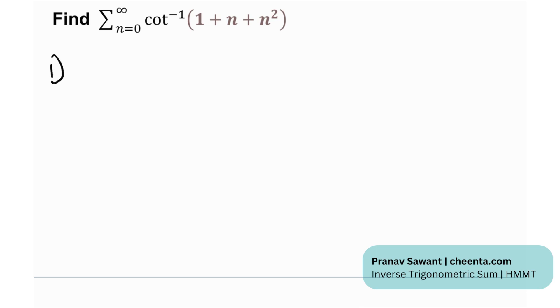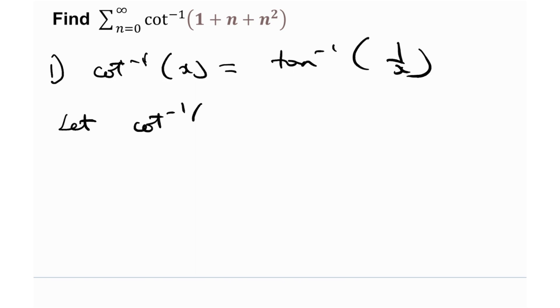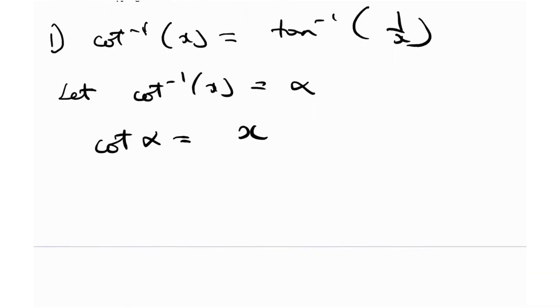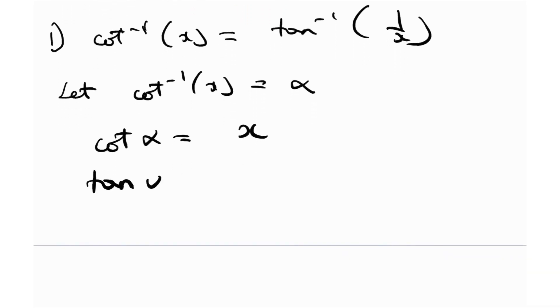The first one is that cotangent inverse of x is nothing but tangent inverse of 1 by x. And there exists a really cool proof for this. So let cotangent inverse x be equal to alpha. That means that cotangent alpha is equal to x. But then what is tangent of alpha? Well, it would simply be 1 by x because cotangent, tangent, the product is 1. So if cotangent alpha is x, tangent alpha will be 1 by x.